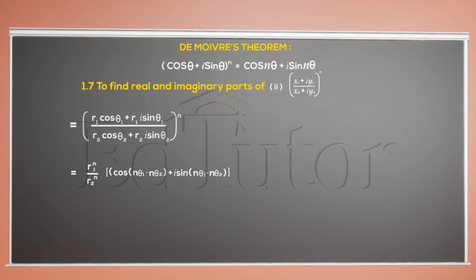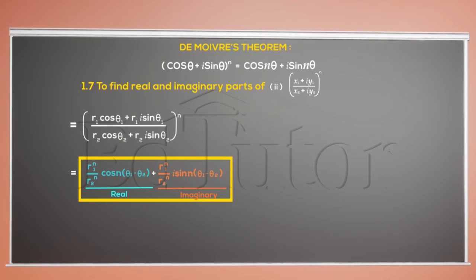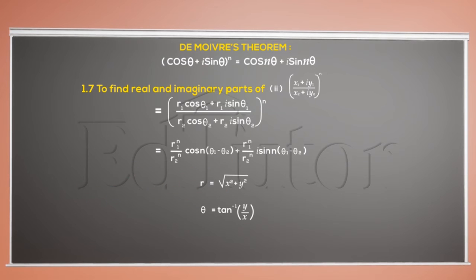Now, just take n common and multiply these brackets with R1 upon R2 again. Finally, we got our real and imaginary parts of the given expression. And at this point, I think it's very clear what R and theta is.